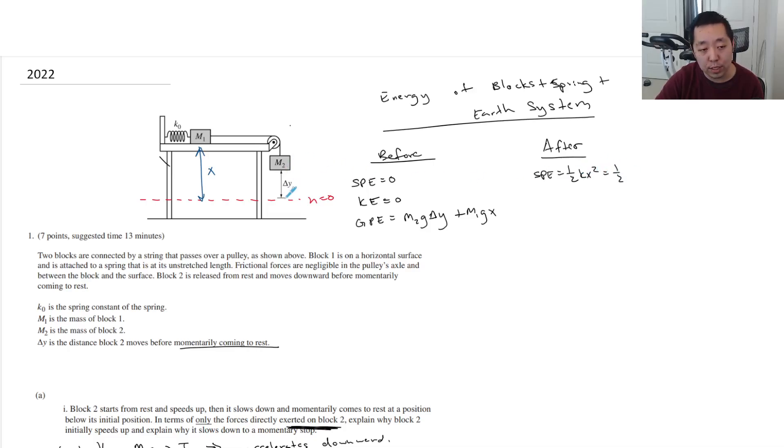Well, if it falls a distance delta Y, it's going to move to the right a distance delta Y. Because they're going to move in tandem like that.